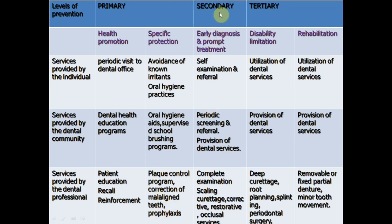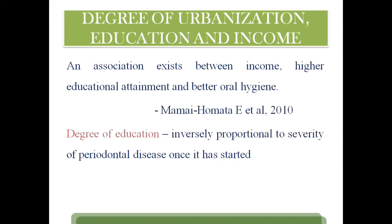Under secondary prevention, the disease is just beginning. Measures include self-examination, visiting a dentist, periodic screening, and professional interventions like scaling, curettage, restorative, and occlusal services. Tertiary prevention addresses established damage: dental professionals can provide deep curettage, root planing, periodontal surgery, and splinting. For rehabilitation, removable or fixed prosthetic dentures can be provided.